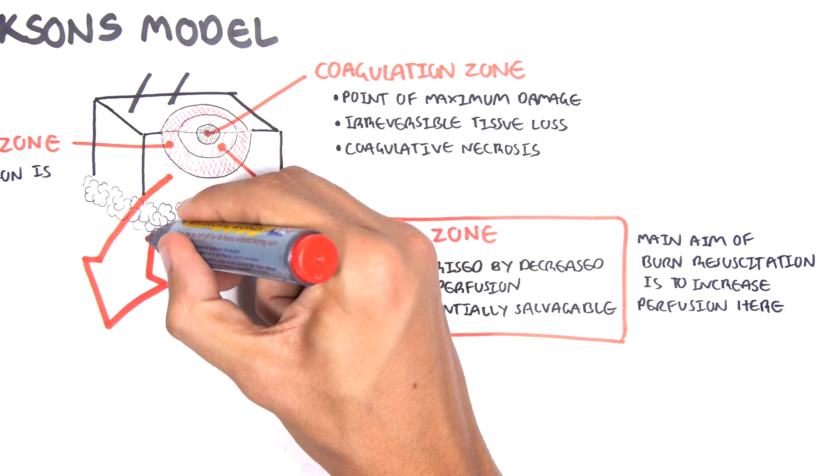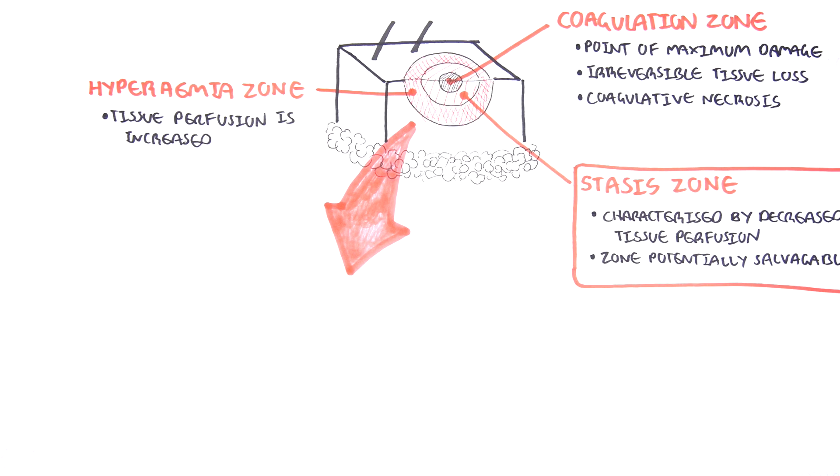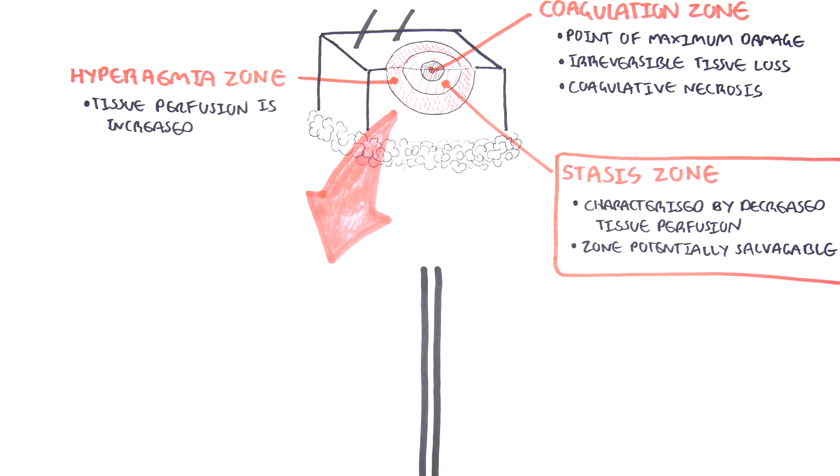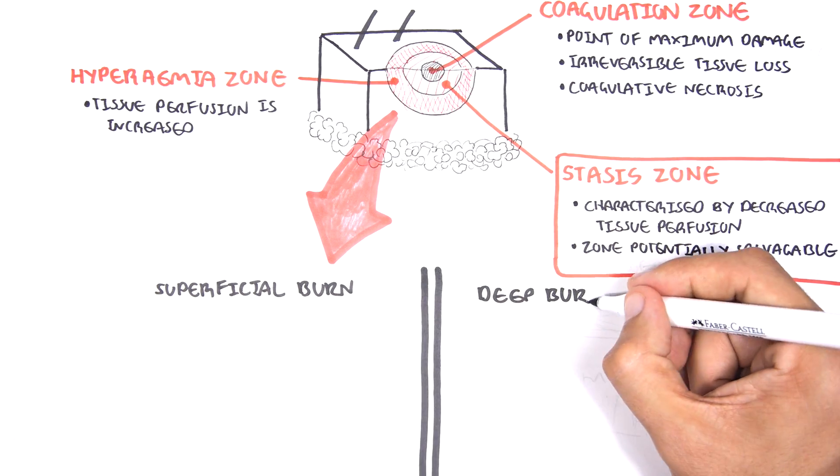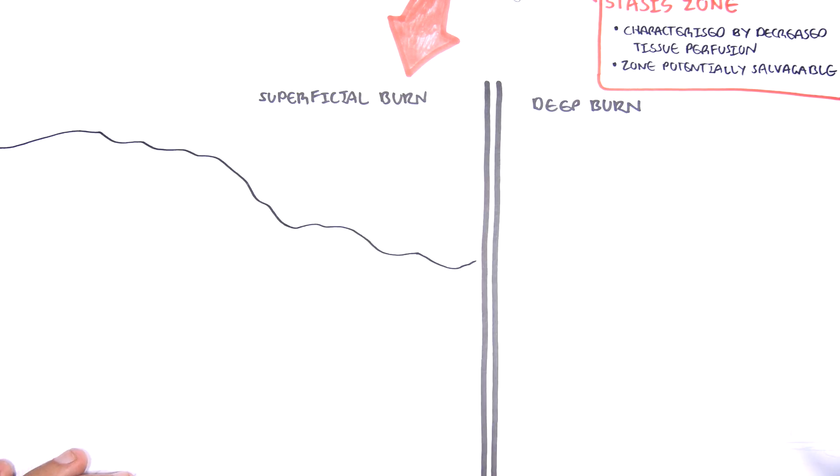The other important aspect of a burn assessment is to know the depth of the burn. To make it super easy, just think of burns as initially being superficial burns or deep burns. Let's zoom into the skin here to look at what happens in a superficial burn and what happens in a deep burn.